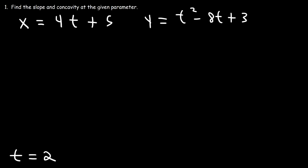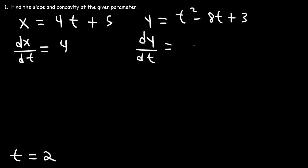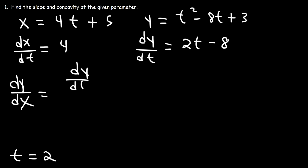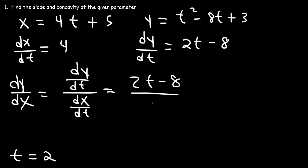So how can we do this? In order to find the slope, we need to calculate dy/dx when t is 2. So let's find dx/dt first. The derivative of 4t plus 5 is simply 4. And dy/dt: the derivative of t squared is 2t, and the derivative of negative 8t is negative 8. So dy/dx is simply going to be dy/dt divided by dx/dt. So that's 2t minus 8 divided by 4.